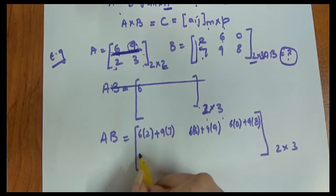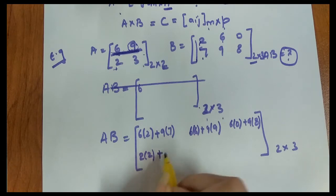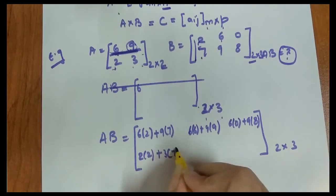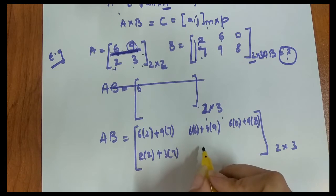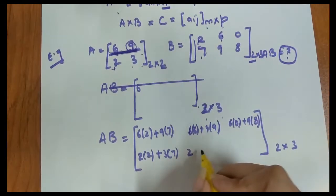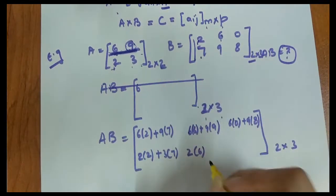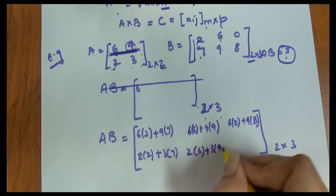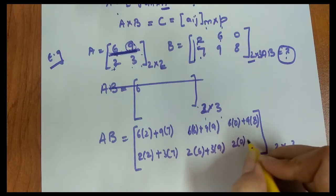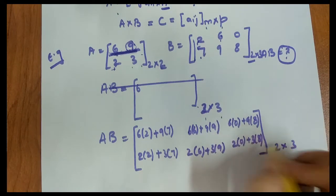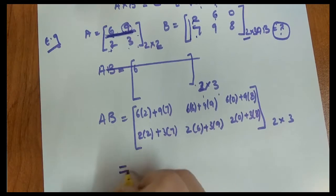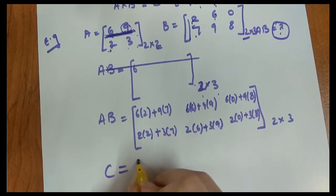a_21, second row first column: 2 times 2 plus 3 times 7. For second row third column, no wait, a_22 second row second column: 2 times 6 plus 3 times 9.